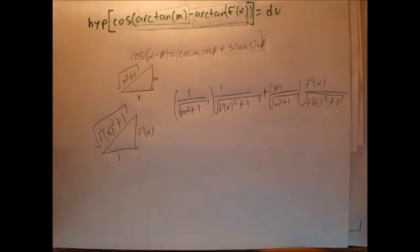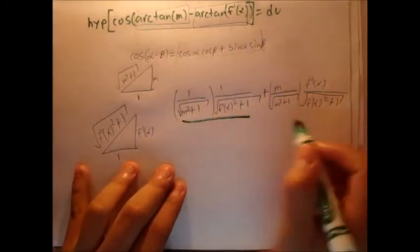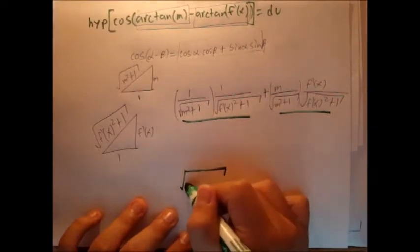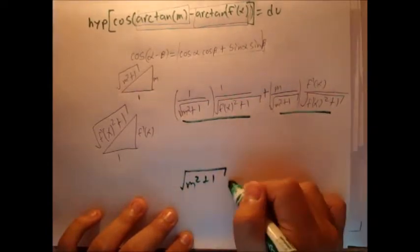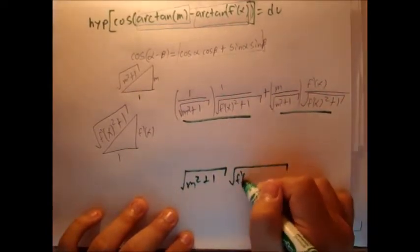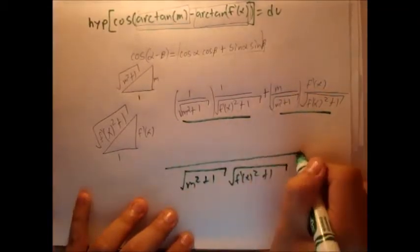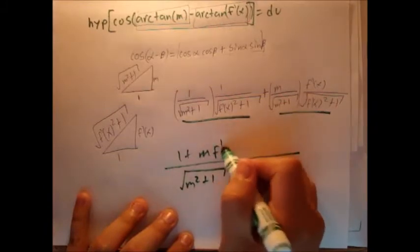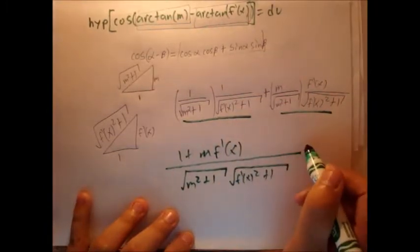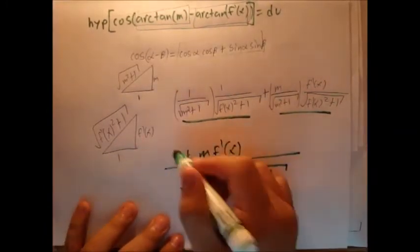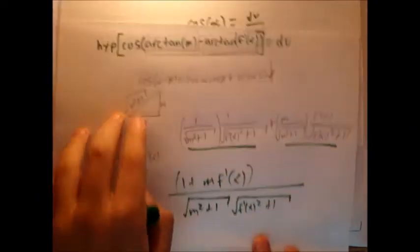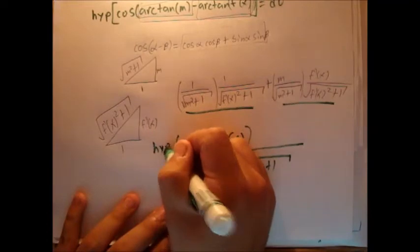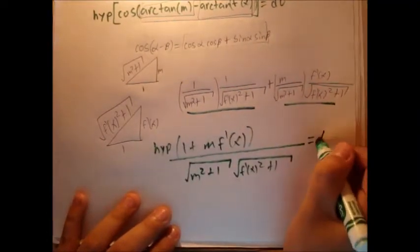So let's actually gather this together. Here we see that we have common denominators. So we can just write the denominator, square root f prime x squared plus 1. And here that's 1 plus m f prime of x. And of course, this was multiplied times hypotenuse. Let's put that in. Hypotenuse equals dv.